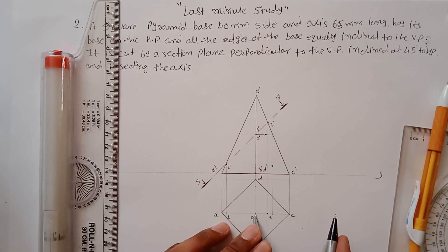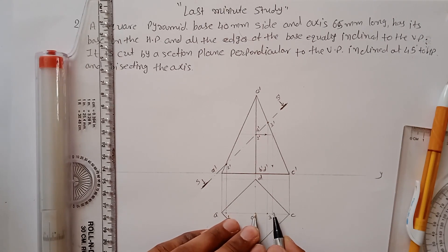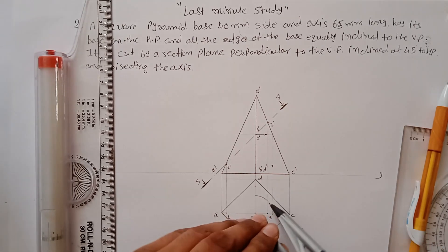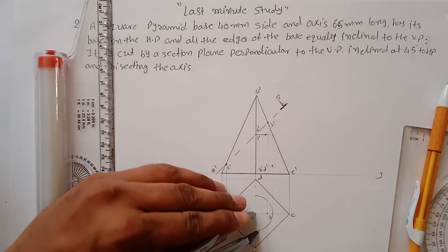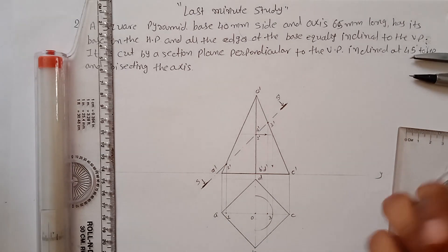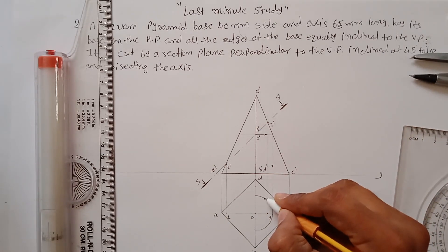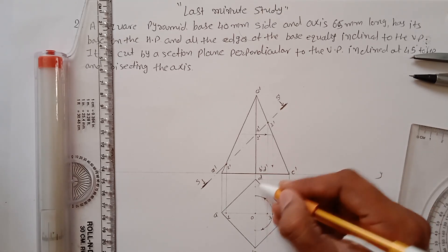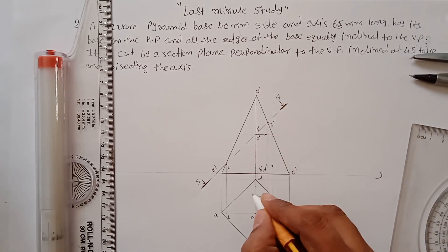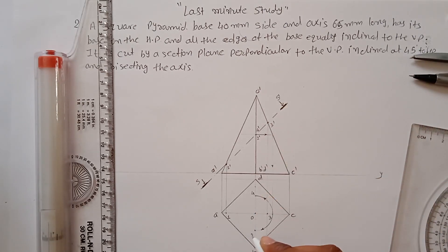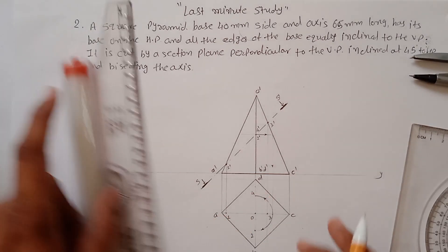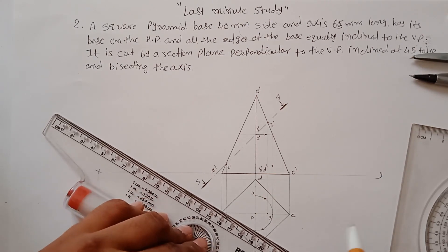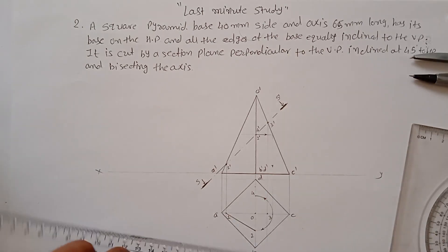Transfer these projections and measure the distance from O to the transferred point. Draw the arc to locate points on edges OD and OB. This gives point 4 (on OD) and point 2 (on OB). You now have all four points: one, two, three, and four. Join them with straight lines since this is a square pyramid.